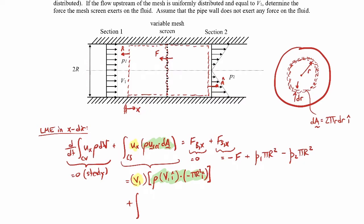Now we need to write out the velocity as a function of radius. I'll call the velocity at the outer edge v_max, so the velocity as a function of radius is v(r) = v_max times r over R. I arrived at this because the profile is linear, the maximum velocity is v_max at radius R, and it's zero at the center. When r equals zero, v should be zero; when r equals capital R, I get v_max. This is the equation of a line.